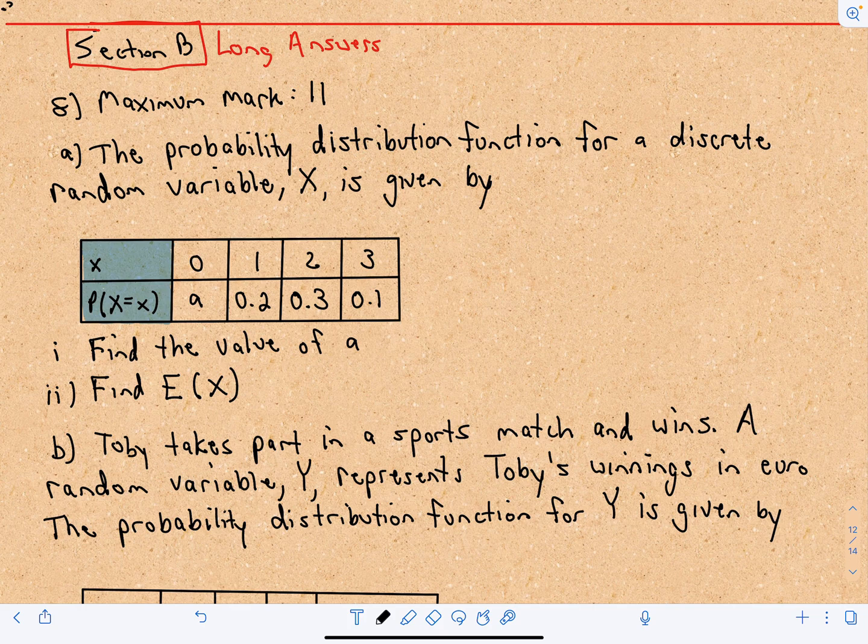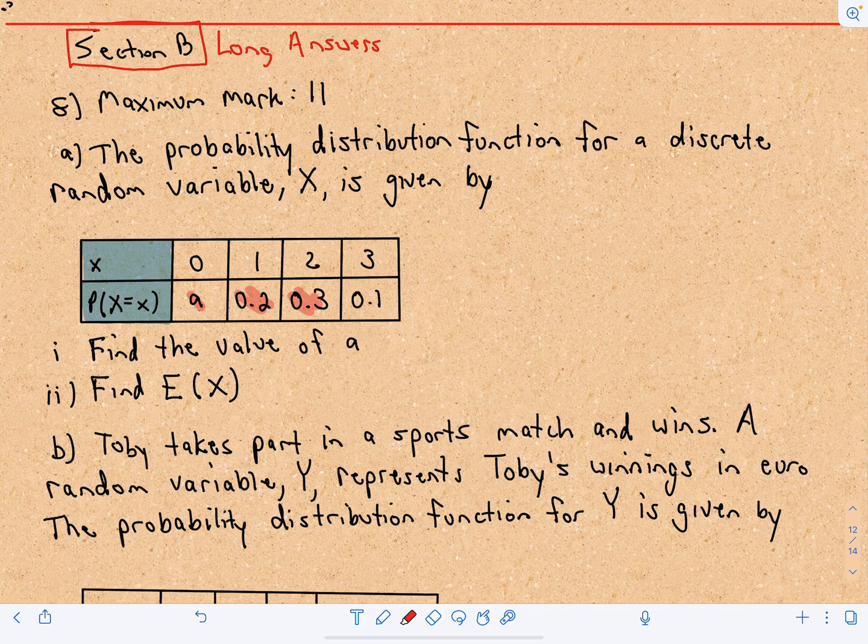In this one we have that the probability distribution function for a discrete random variable X is given by, so X can have values of 0, 1, 2, and 3, and with respective probabilities of A, 0.2, 0.3, and 0.1.